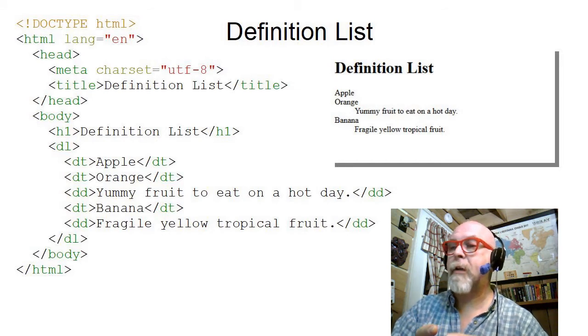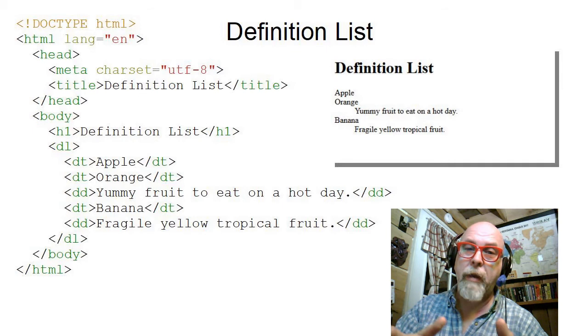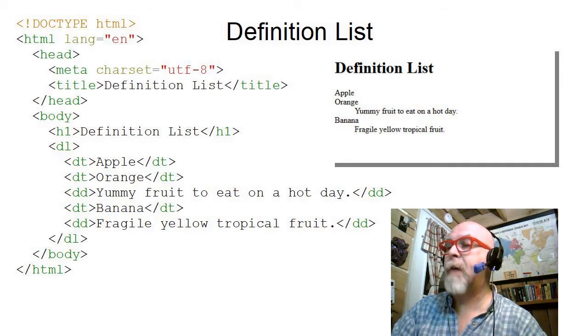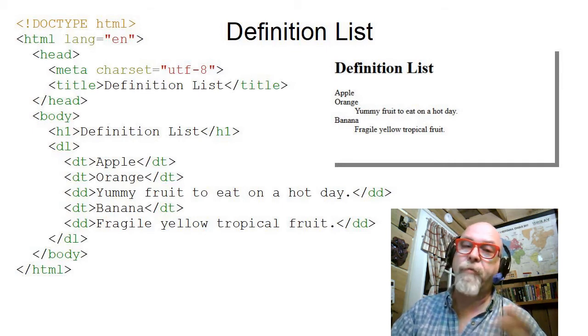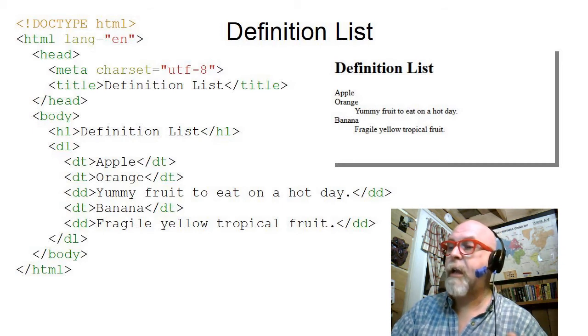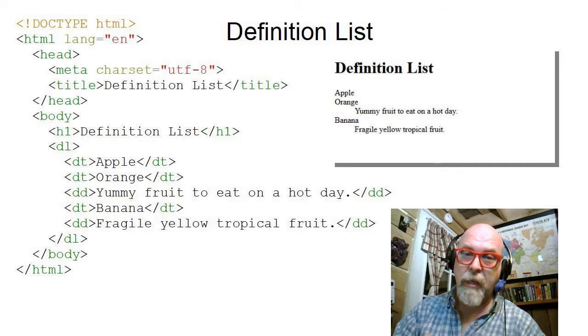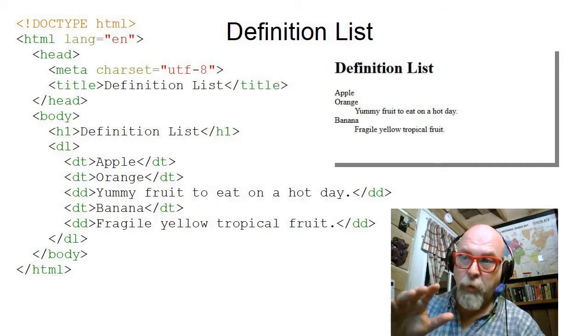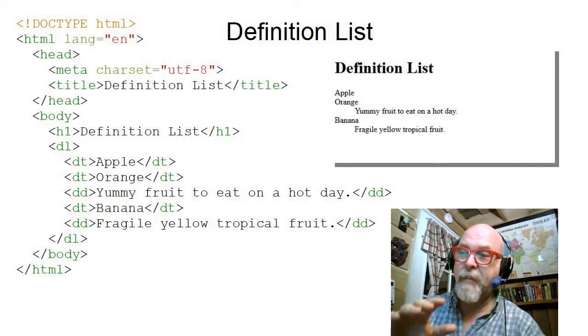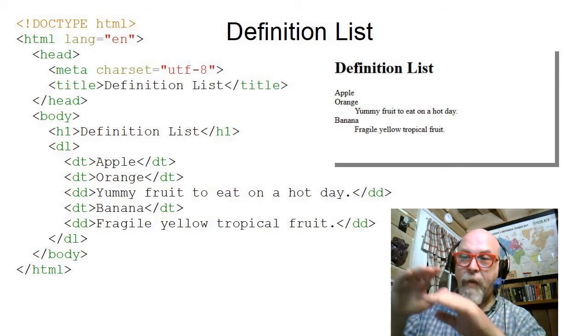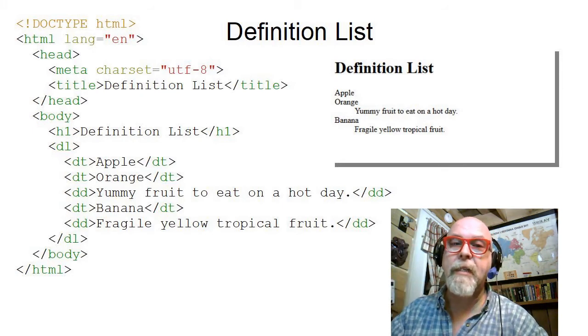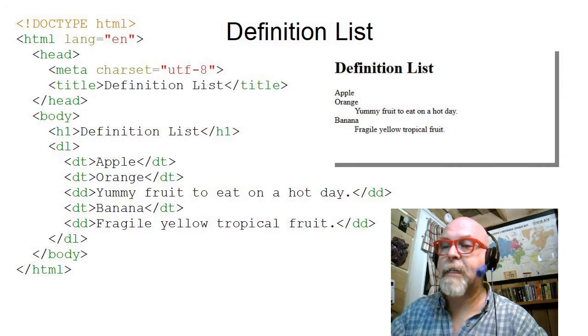Not necessarily dictionary definitions, but you may use dictionary definitions. You can see that apple and orange are yummy fruit to eat on a hot day, and banana is a fragile yellow tropical fruit. The definition goes with those two first terms, and the second definition goes with the third term as they follow along in pairs of DTs and DDs.